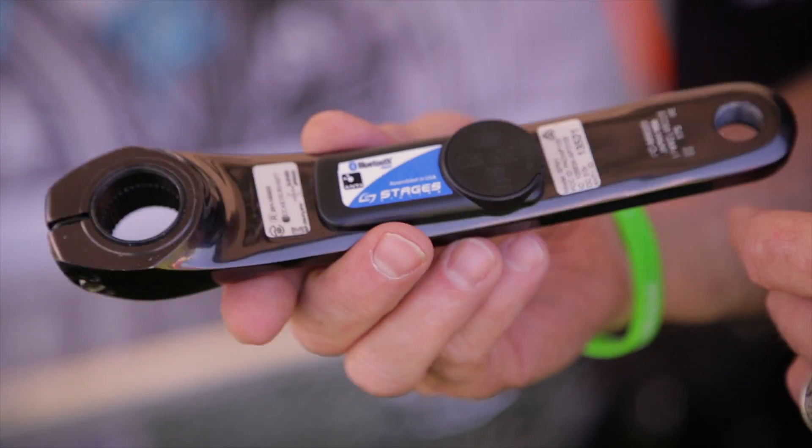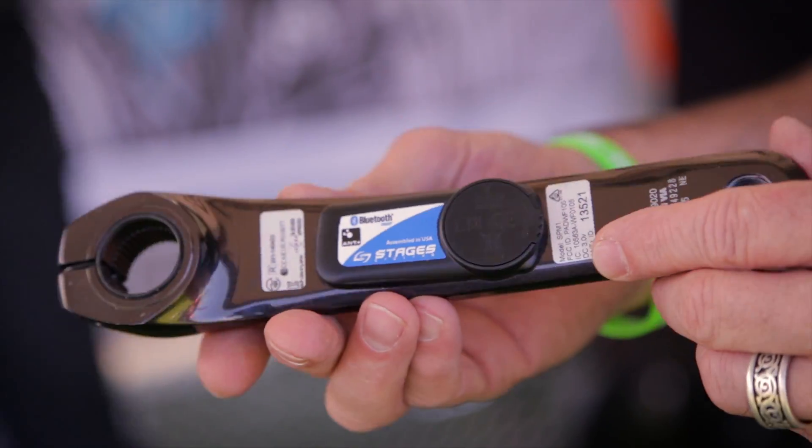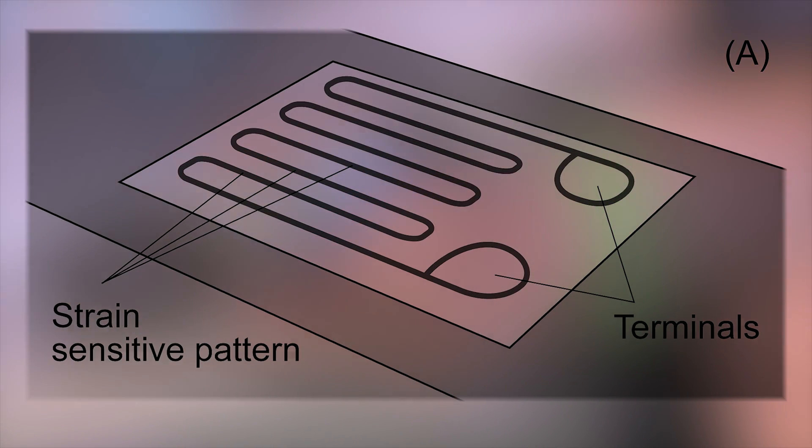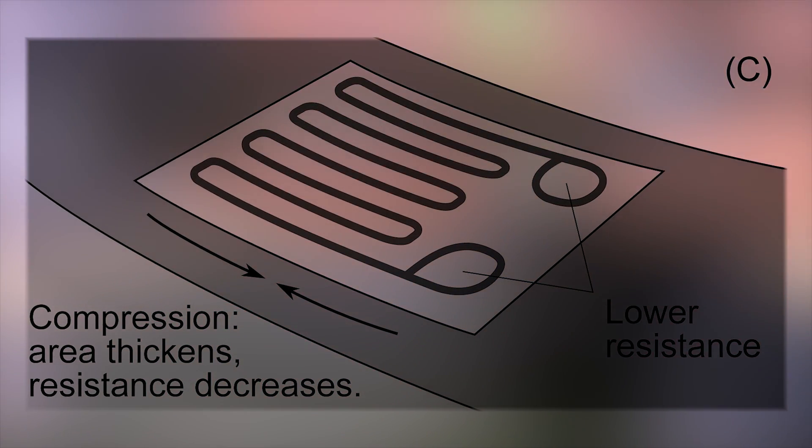First is the strain gauge. The strain gauge allows us to measure the amount of force a rider is putting through the crank arm. A strain gauge has a very low voltage run through it. If you think about the wires of a strain gauge that are containing that voltage as a garden hose, as you bend and flex your crank arm, the resistance changes.